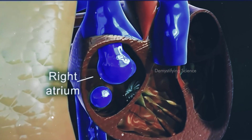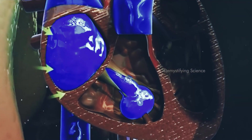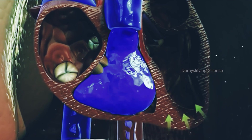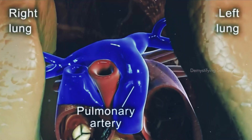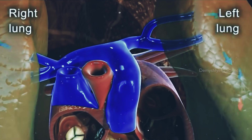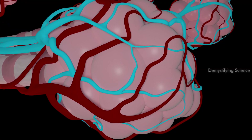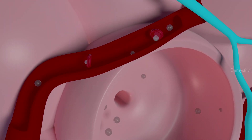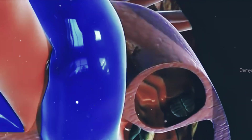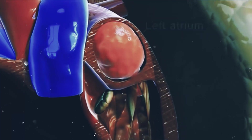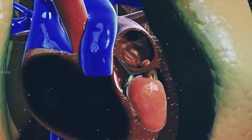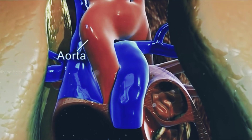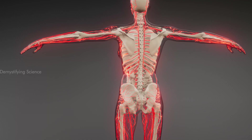The right atrium receives deoxygenated blood from the veins and pumps it to the right ventricle. The right ventricle receives that blood from the right atrium and pumps it to the lungs. As the blood is now oxygenated, the left atrium receives that oxygenated blood from the lungs and pumps it to the left ventricle. The left ventricle pumps oxygen-rich blood to the rest of the body.